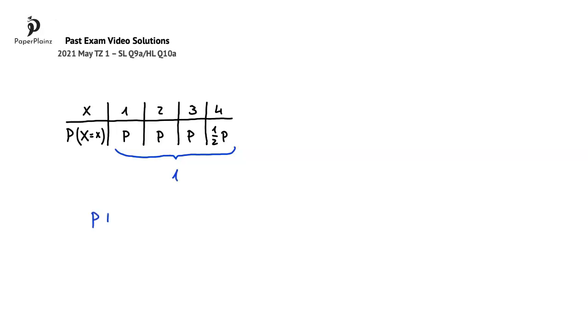Therefore, we can write that p plus p plus p plus 1 half p is equal to 1. Working further, we get 3p and a half or 7p over 2 equals to 1, and from this, p is 2 over 7.